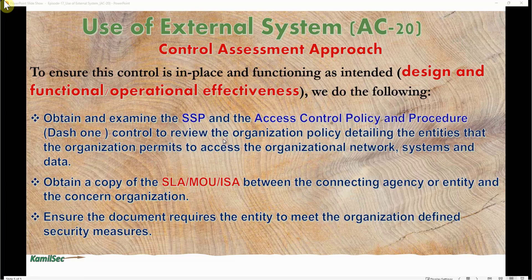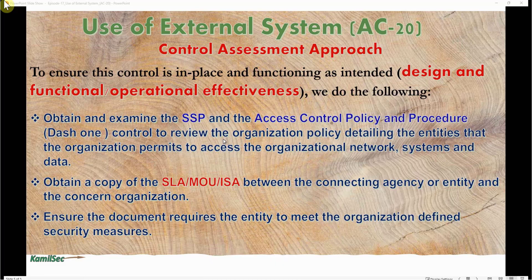Also, for the most part, when you are assessing this control and there is an interconnection between the system you are assessing, this control will be referenced in CA-3. A lot of the time, assessors will not test the control here for AC-20. They will say see or reference CA-3, whereby they will actually do the testing for the interconnection itself and examine all the connections between all the systems. So, nine times out of ten, this control might not be assessed within the AC family. In the assessment spreadsheet, assessors will refer back to CA-3 and note 'see CA-3 for details of the assessment regarding system interconnections.'